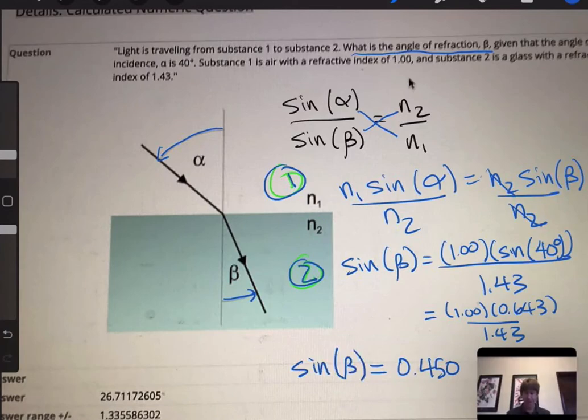The next question is how do we get rid of sine beta? Right above your sine button there's probably one that says sine to the minus one. You're going to have to hit the shift button to make that happen. I had 0.449 something, but I'm going to put 0.450 and hit shift, then sine to the minus one.